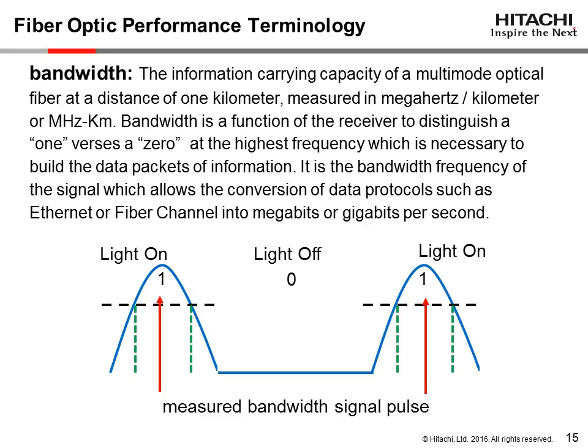Bandwidth is the information carrying capacity of a multimode optical fiber at a distance of one kilometer, measured in megahertz per kilometer, or MHz-km. Bandwidth is a function of the receiver's ability to distinguish a one versus a zero at the highest frequency necessary to build a data packet of information. It is the bandwidth frequency of the signal which allows the conversion of data protocols such as Ethernet or Fibre Channel into gigabits per second. In multimode, bandwidth performance is limited by dispersion, a broadening of the transmitted light pulse. Single-mode fiber has virtually unlimited bandwidth.